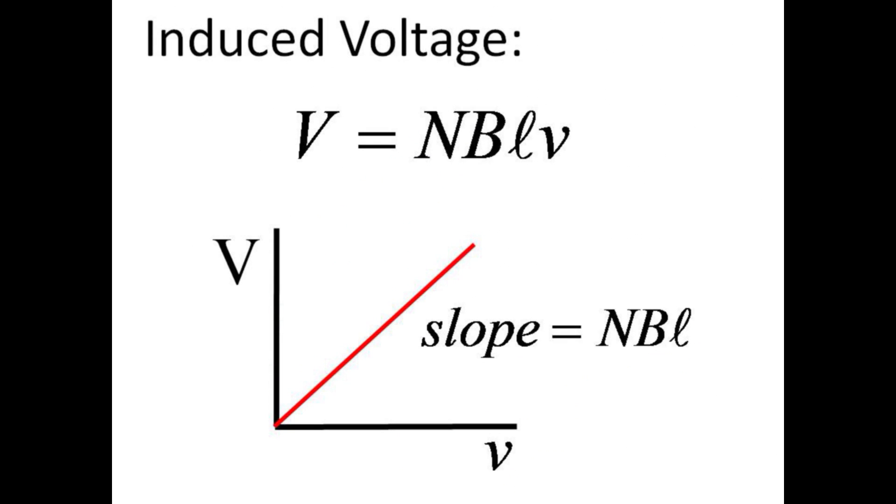We see that the induced voltage, capital V, is proportional to the velocity, small v, of the leading edge of the coil through the magnet. A plot of voltage versus velocity should yield a straight line with a slope of N, B, L.